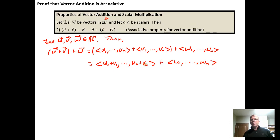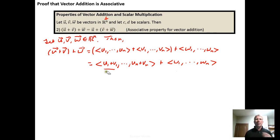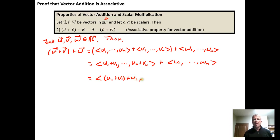Now I just have the sum of two vectors again, and we know how to do that — component by component addition. We walk through and wind up with the vector (u sub 1 + v sub 1 + w sub 1, ..., u sub n + v sub n + w sub n).